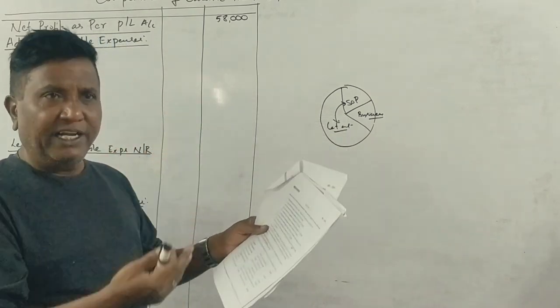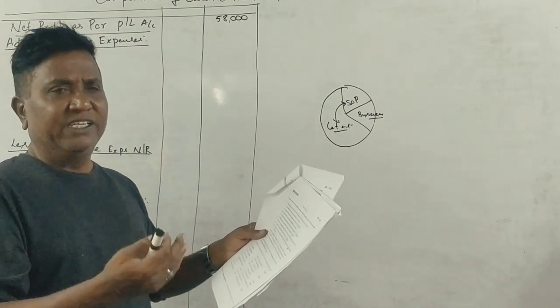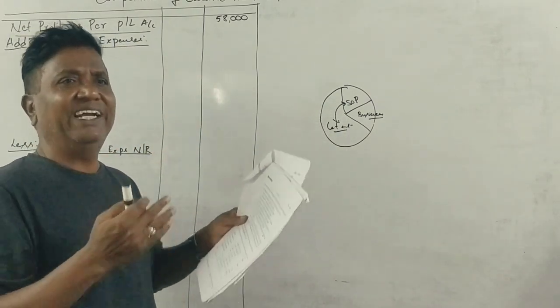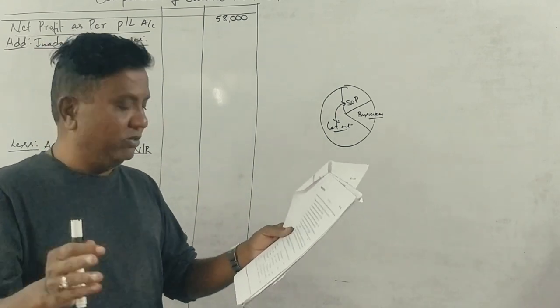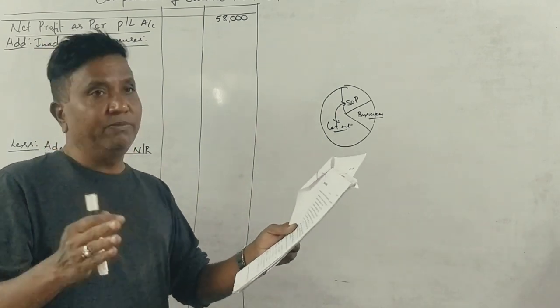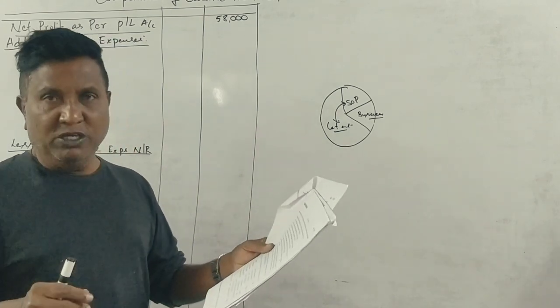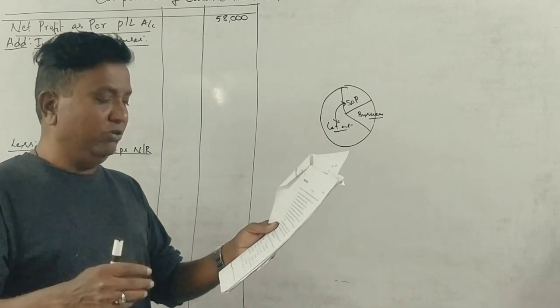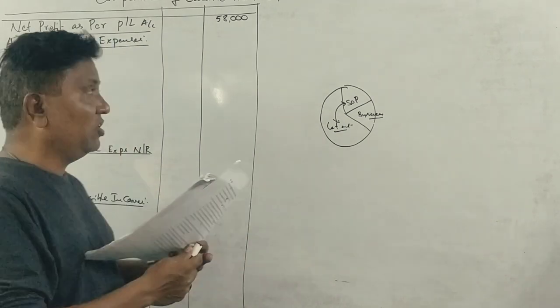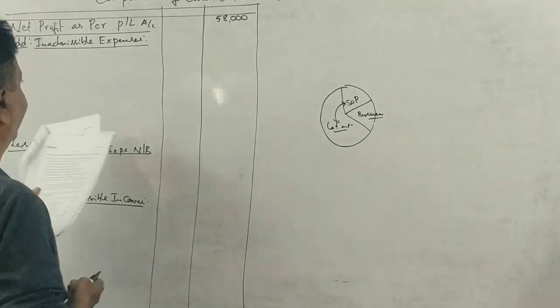Looking at the debit side, the following are straightforwardly admissible as business expenses: salaries — business expense, advertisement — business expense, sundry expenses — business expense, and interest on capital.